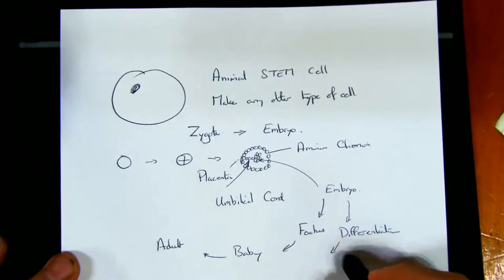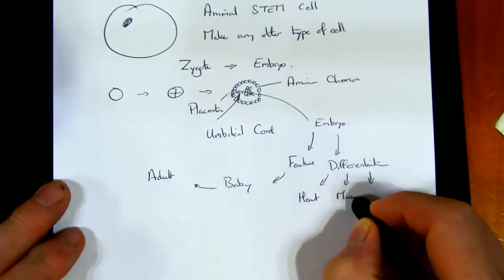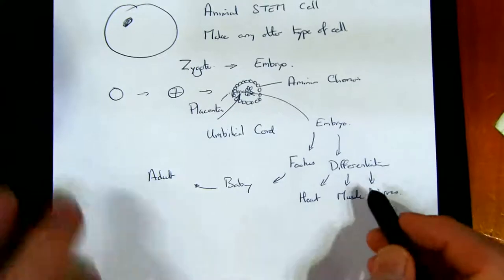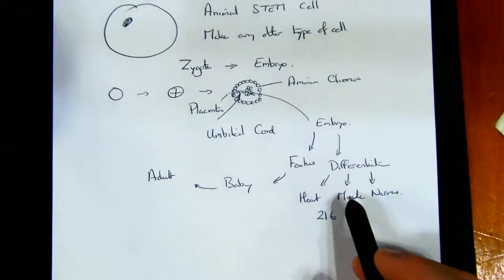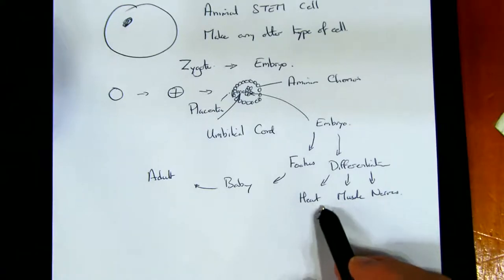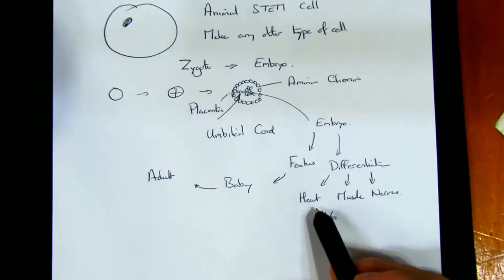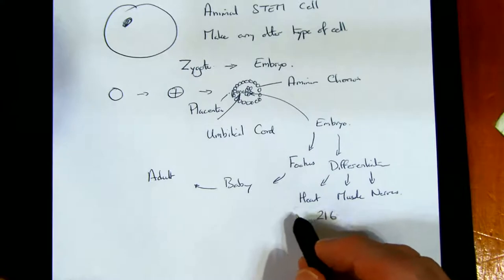We're forming all the different cells in the body — things like the heart, muscle, nerves. There are about 216 cell types in a normal adult. Many differentiated cells can divide and replace themselves, but some tissues can't do this. The heart is one — if you injure your heart, heart cells that beat are normally replaced by scar tissue cells, which don't beat, and you gradually get a much less functional heart.